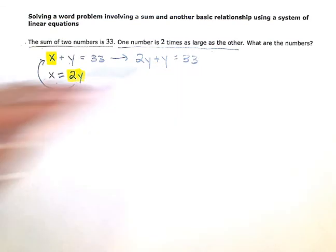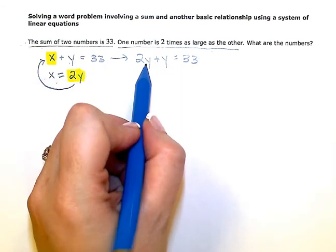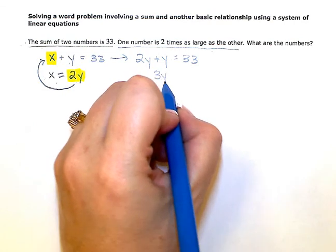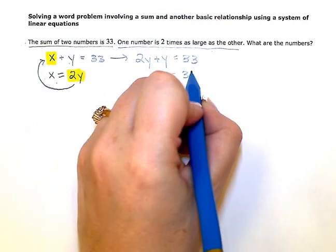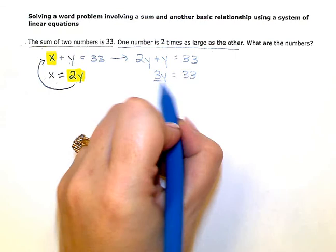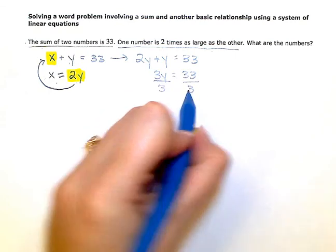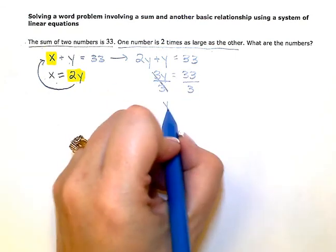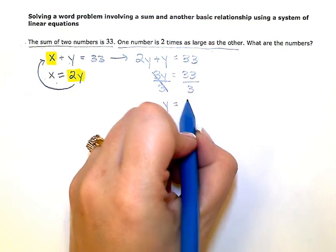And then I can just go ahead and solve. I'm going to combine these like terms. So 2y plus y is 3y equals 33. And then divide both sides by 3. So y is equal to 33 divided by 3 is 11.